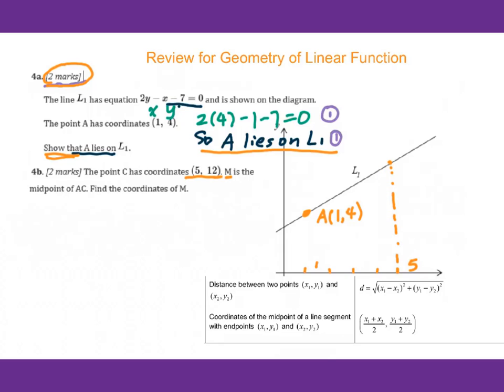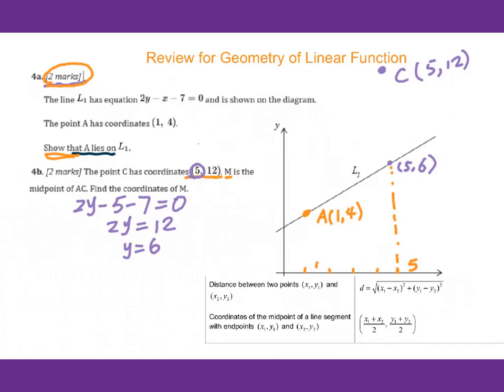Is it above L1 or below L1? How do you check that? You need to plug in. So we plug in 5 into this equation. You will get 2y - 5 - 7 = 0. So we have 2y = 12, y = 6. This point will be (5, 6). Therefore, for (5, 12) it will be here. C, 5, 12. Then you need to connect AC.